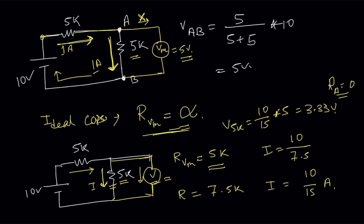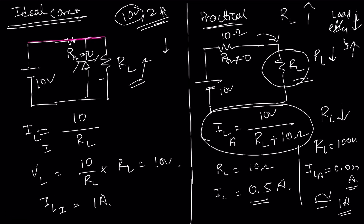So I think you already understand what the loading effect is. Loading effect means whenever we connect something to the circuit, if that particular thing draws some current from the circuit, it acts as a load and we get a loading effect. The first solution is: whenever you buy a voltmeter, you should check that its internal resistance is greater than 10 megaohms. If it is greater than 10 megaohms, you will not see that much loading effect.